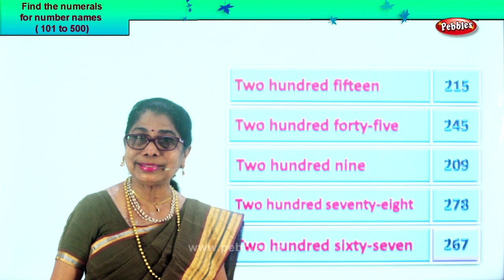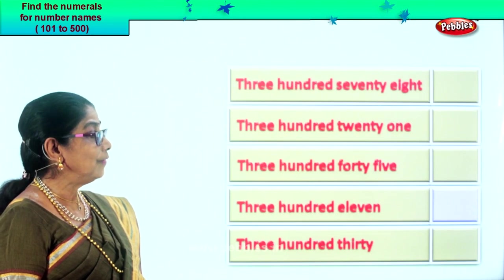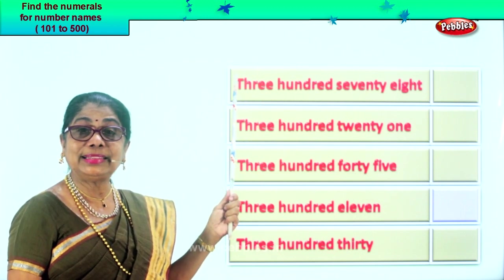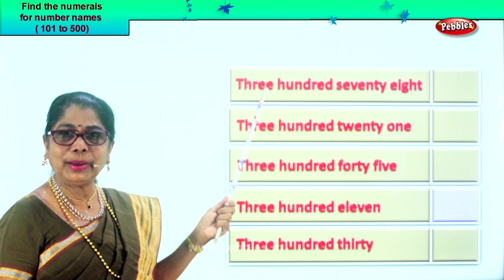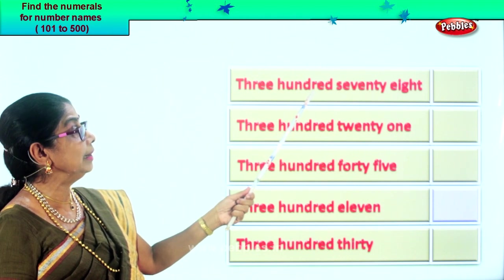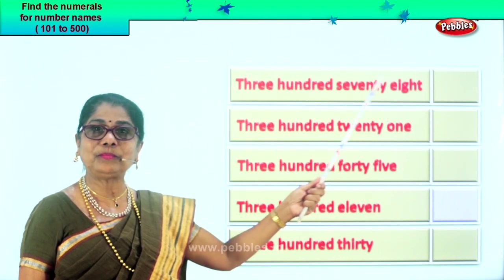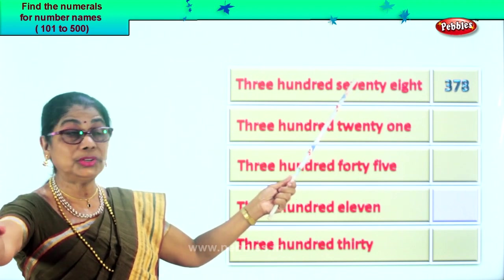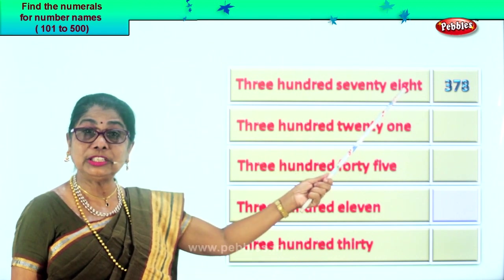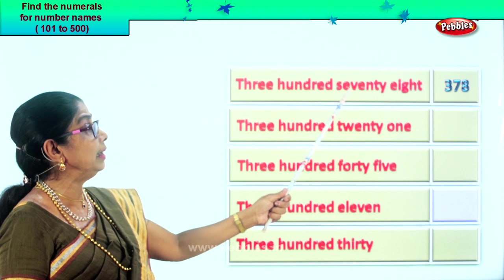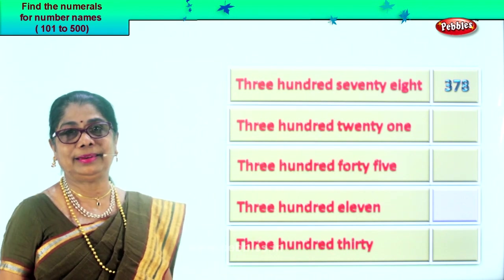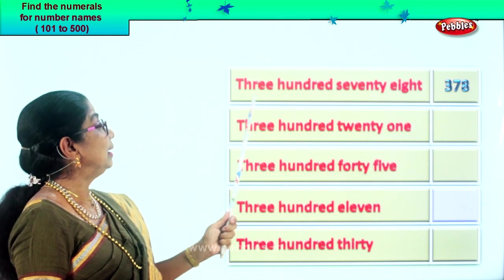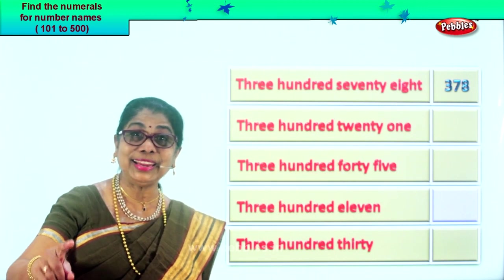Let's get on with some more exercises to fill in with the correct numeral. The first one, let's read: three hundred seventy-eight. Three in the hundredth place, seven in the tens place, eight in the ones place. Three hundred seventy-eight. Now let's read the numeral: three hundred seventy-eight. Did you enjoy? Good.